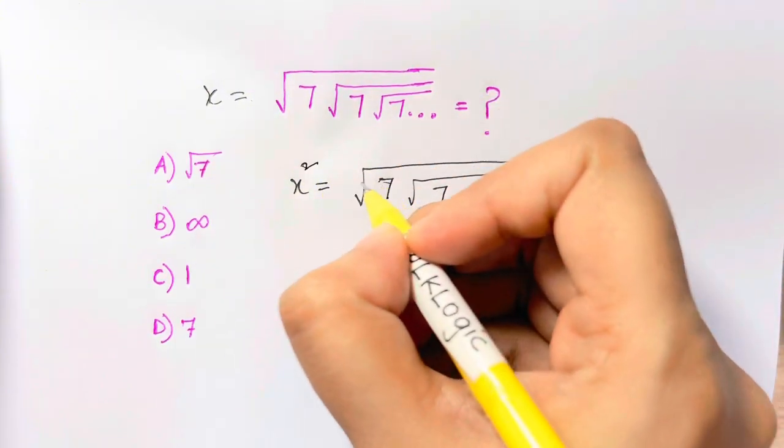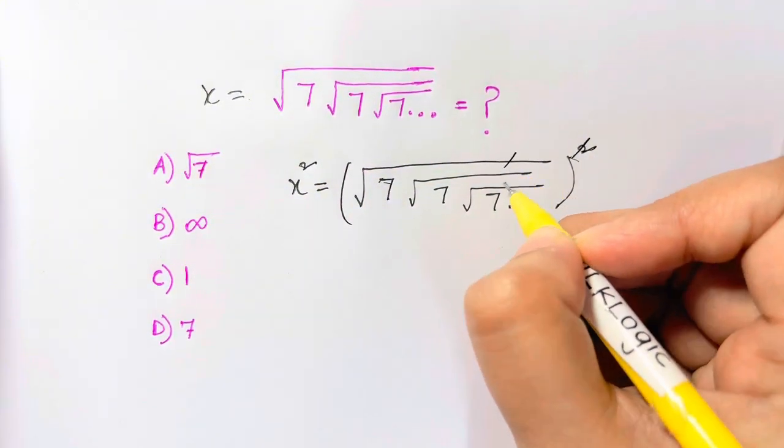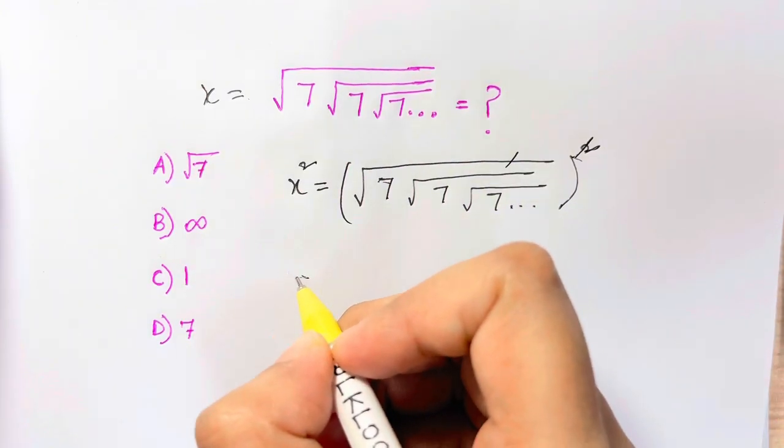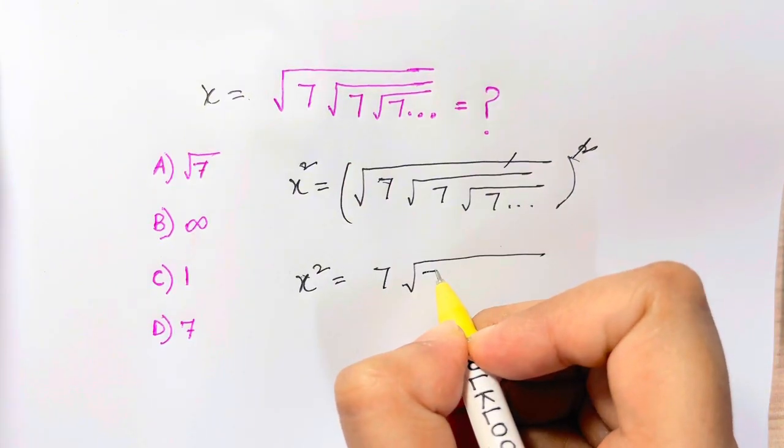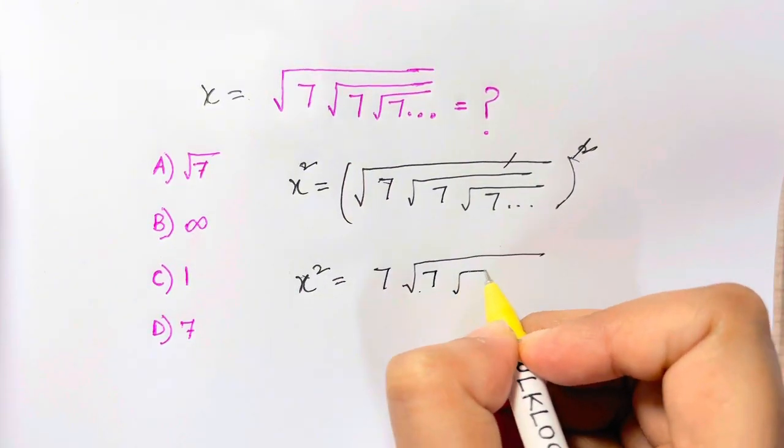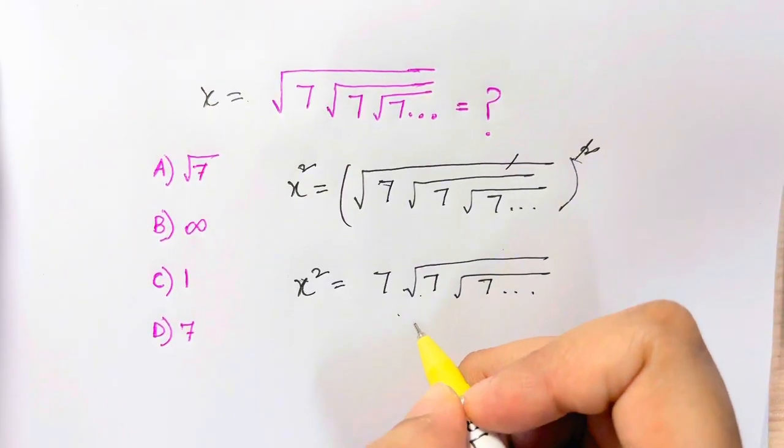Now we square both sides. After we square here, the square root and square gets cancelled. So here we have x square is equal to 7 and the same old thing, square root of 7, square root of 7 and so on.